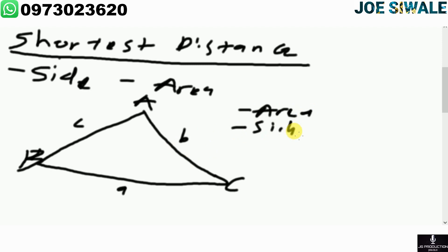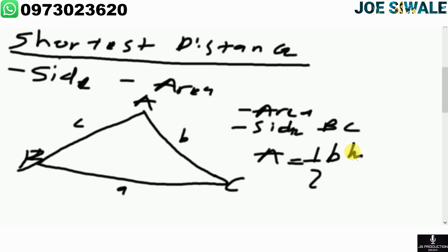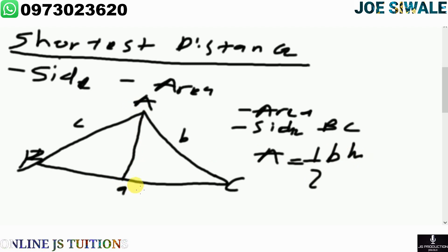The side you are supposed to know is side BC, which is a. The formula used when calculating the shortest distance is: area equals half b times h. The shortest distance in this non-right angled triangle is the distance from A to BC — the line that comes from A to BC, forming a right angle.